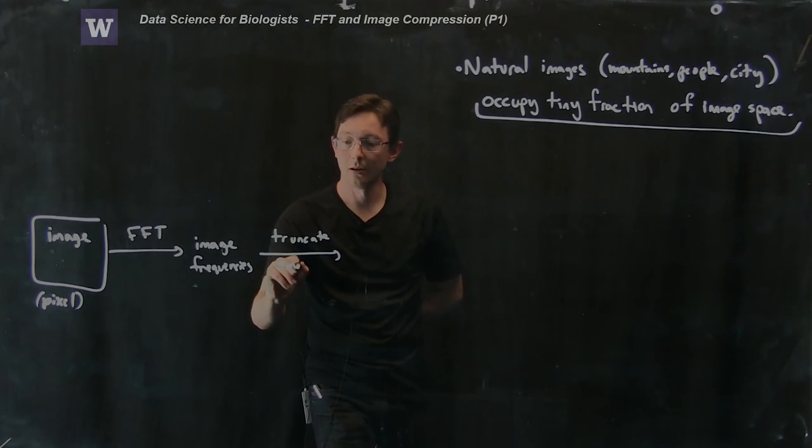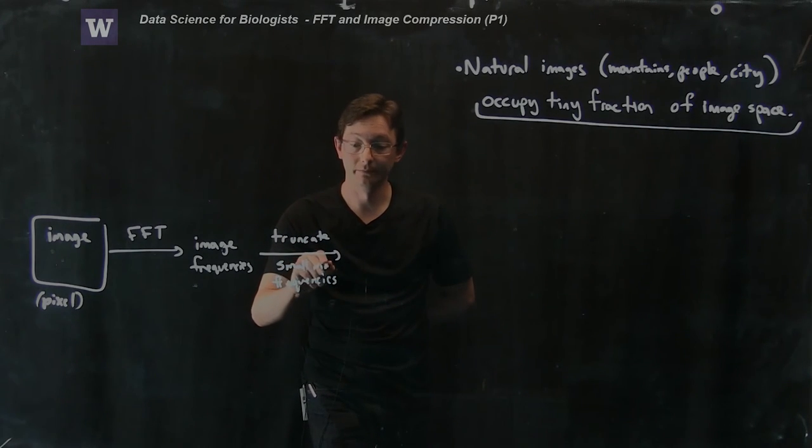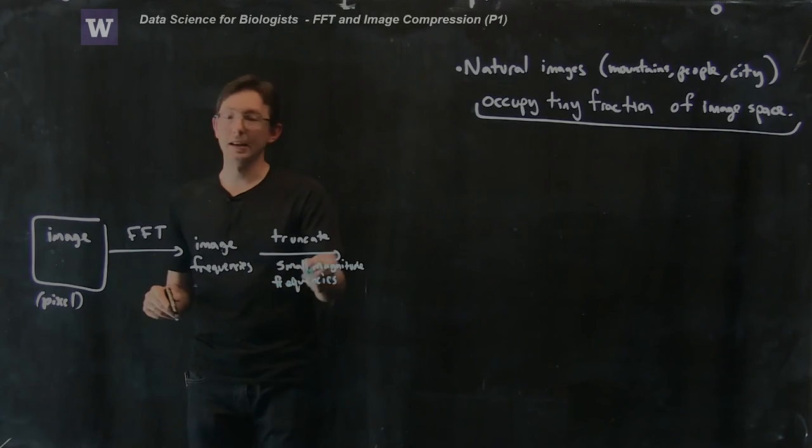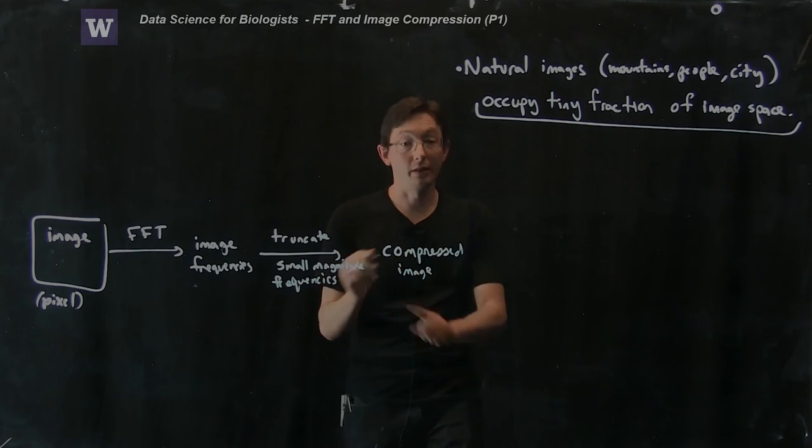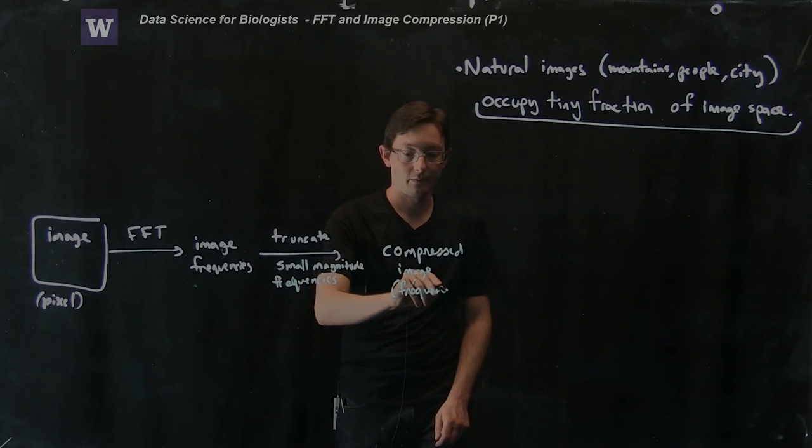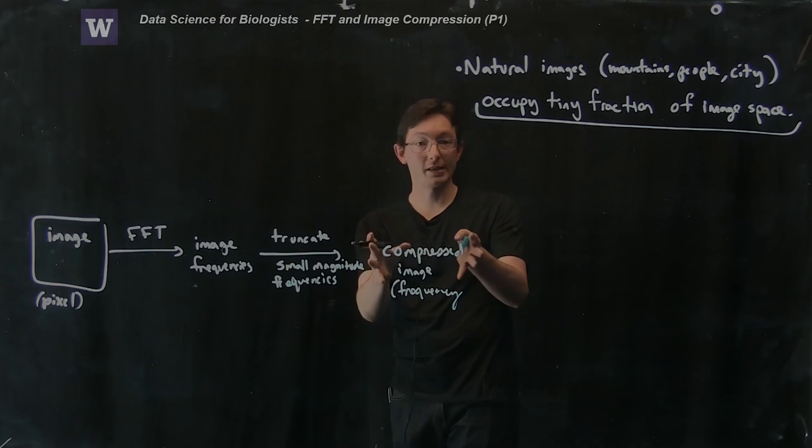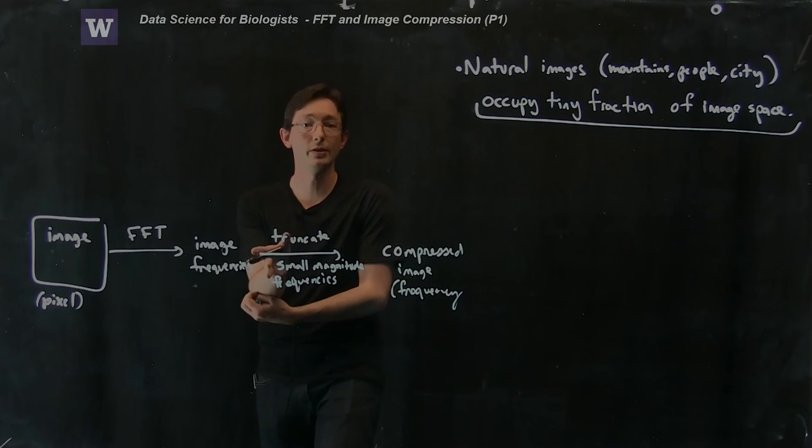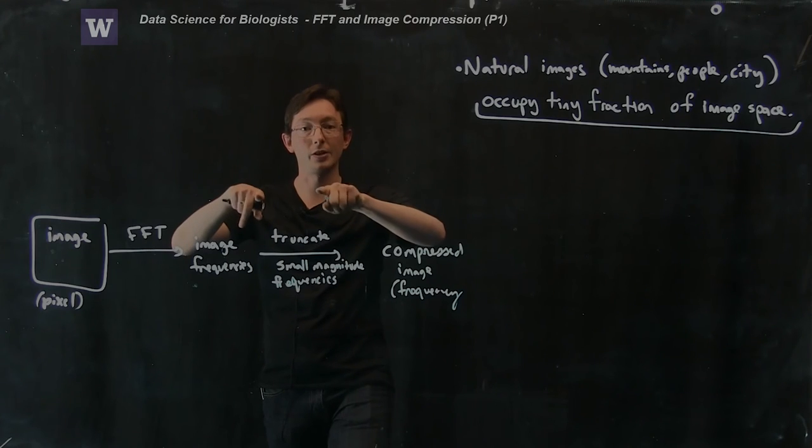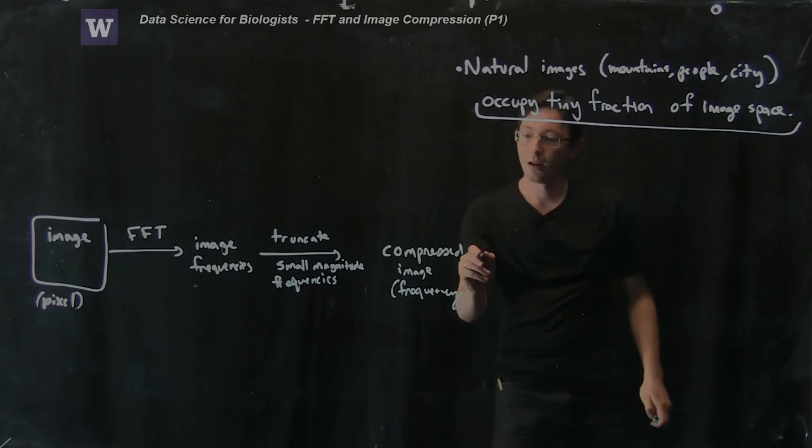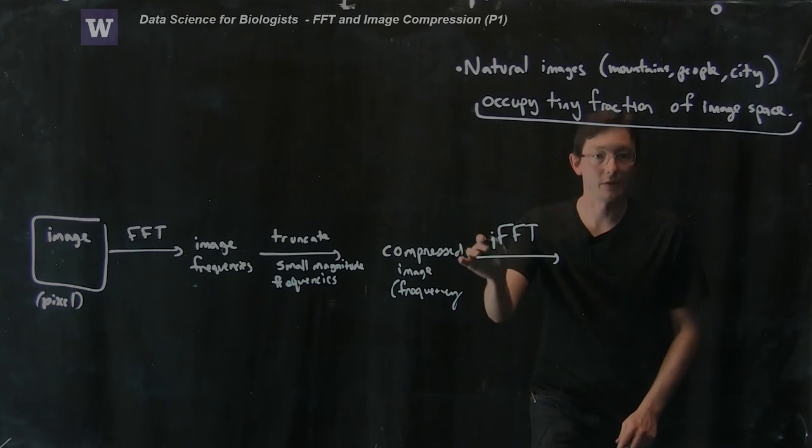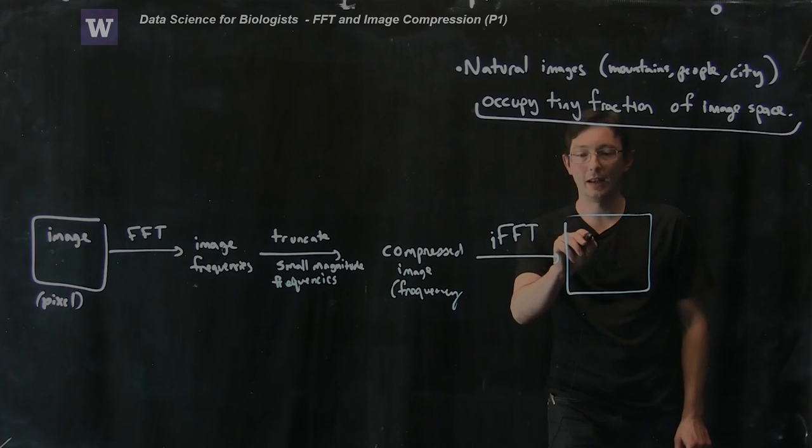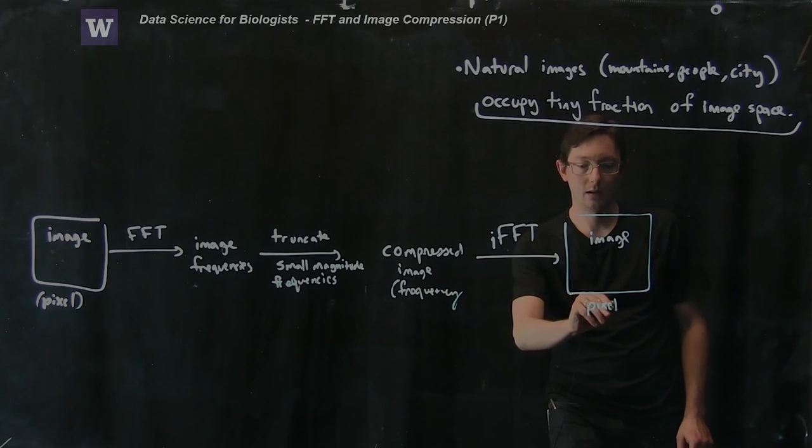And so what I can do is I take these image frequencies and I can truncate the small values. So truncate small frequencies, small frequency values, truncate frequencies with small magnitude. And what I get is essentially a compressed image. And we're still in frequency space. So the last thing that we do is we take these compressed frequencies. We've thrown away most of the frequencies. This is just like in the two sine wave filtering example. We took and we only kept the things that were above threshold and we zeroed out all of the other small Fourier coefficients. And the last thing we need to do is do an inverse fast Fourier transform. This is not Apple's fast Fourier transform. This is an inverse fast Fourier transform. And finally, we get back an image in pixel space, but this is a compressed image.